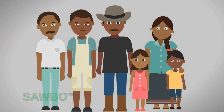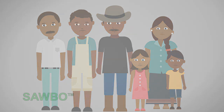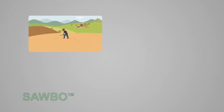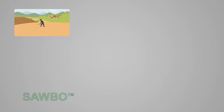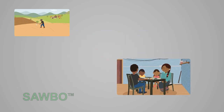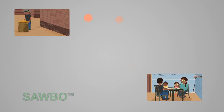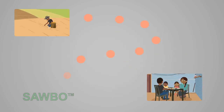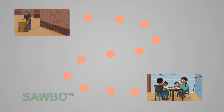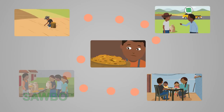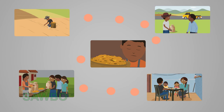An agricultural value chain is a system of people that work in various stages in crop production. The value chain contains every person that works to get the crops from the farmer they are planted to the consumer that will end up eating them. This animation explains the importance of each individual's actions in a value chain.